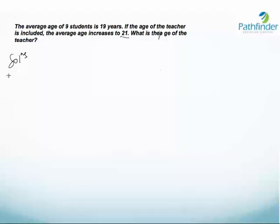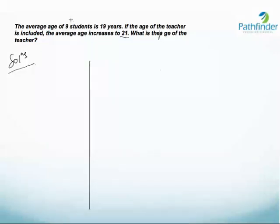Let us try to solve this by the deviation method. The first rule of the deviation method is which average to consider. There are two groups here — one group has 9 students and then there is the teacher, which forms the other group. In order to solve this question by the deviation method, we will consider the average of the total number of people in the group.